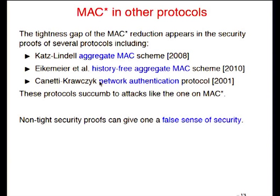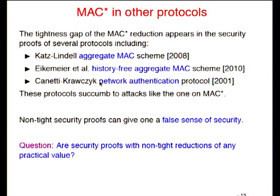To conclude: non-tight proofs can give one a false sense of security. The literature has literally thousands of papers with non-tight proofs. Many proofs have five to ten parameters which must be analyzed to recover the non-tightness, and it really isn't clear whether the non-tightness is important or not. A very legitimate question is whether security proofs with non-tight reductions have any practical value.